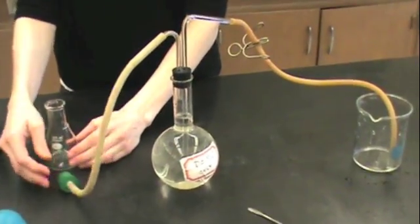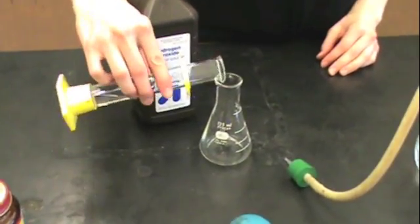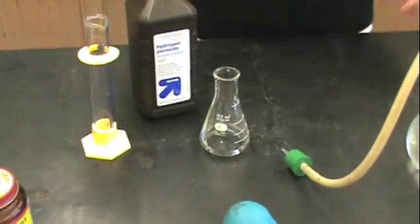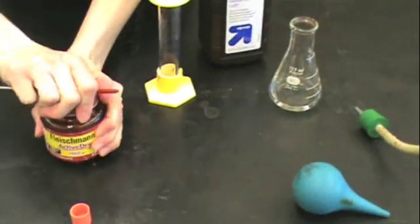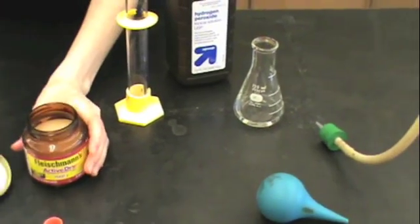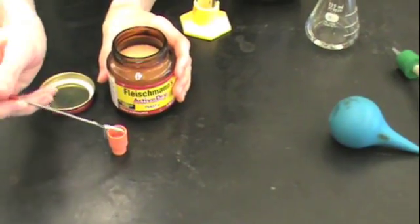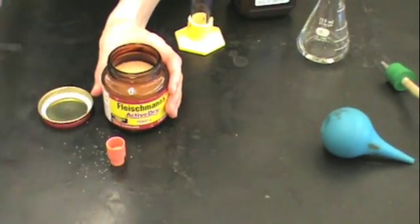Replace the pinch clamp, and now you can weigh out your Erlenmeyer flask and add about 16 mils of hydrogen peroxide to this flask. You will then obtain a red stopper and some yeast and add enough yeast to the stopper to just cover the top of the stopper. It doesn't have to be an exact amount. It's usually one or two scoops of yeast.